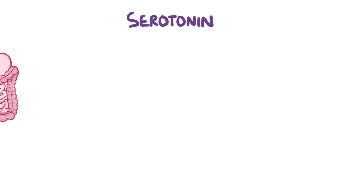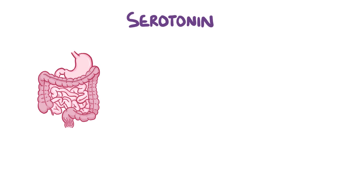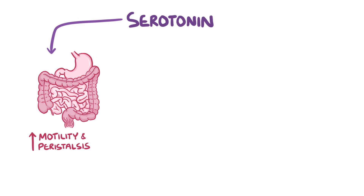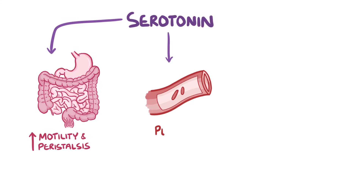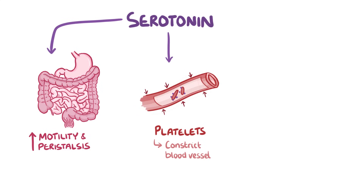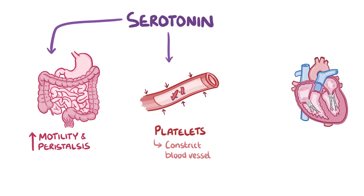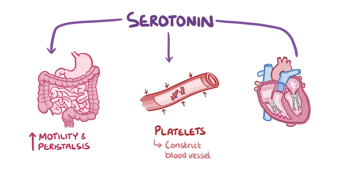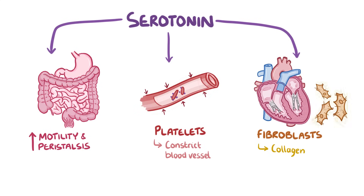So let's have a quick look at what this serotonin is getting up to. In the gastrointestinal tract, serotonin increases motility and peristalsis. In the vasculature, platelets take up the serotonin, and later use it to constrict blood vessels, particularly after injury. And in the connective tissue of the heart, it stimulates fibroblasts, and these make lots of collagen.